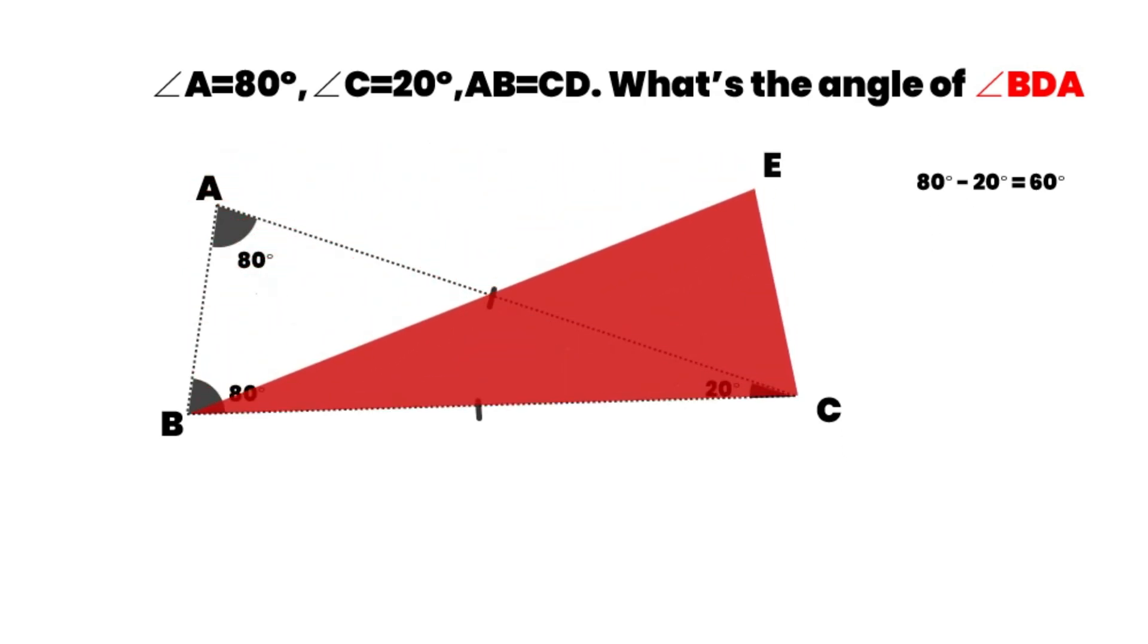Let's make a triangle BCE that is congruent to triangle ABC. Let them overlap at base BC. The overlap creates an angle of 60 degrees. Triangles BCE and ABC are congruent. The triangle BCE is also an isosceles triangle.